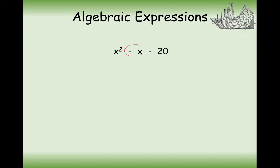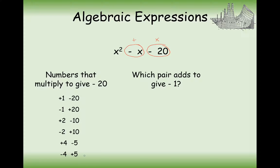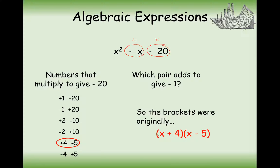A more tricky one now because we have to make them add to make minus x and multiply to make minus 20. The only way we can get two numbers to multiply to make a negative is if one of them is positive and one is negative. So when thinking about our pairs, one always needs to be positive and one needs to be negative. Notice that all these pairs of numbers can multiply to make minus 20. Which pair adds to make minus 1? Well, it'd be the 4 and the minus 5. So our answer is x plus 4 and x minus 5.